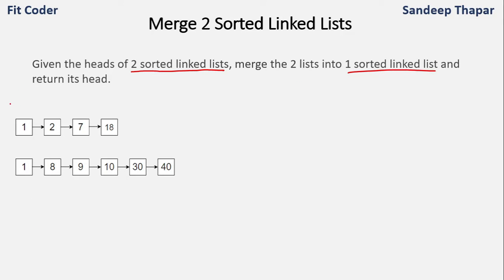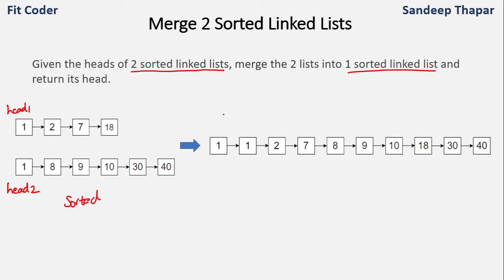Let's take an example. These are the two linked lists we are given — head1 and head2. We can see that the linked lists are sorted: 1 is less than 2, 2 is less than 7, and 7 is less than 18. When we merge them, we get a linked list with values 1, 1, 2, 7, 8, 9, 10, 18, 30, and 40. So we need to combine both linked lists into one and return the head.